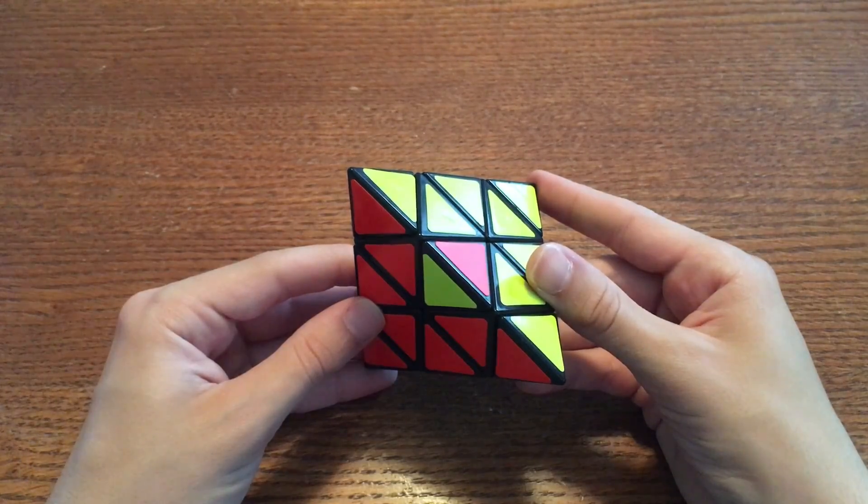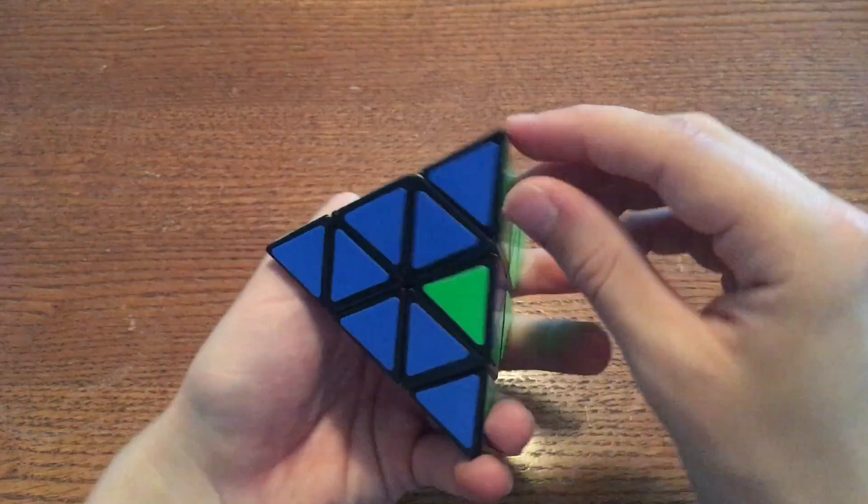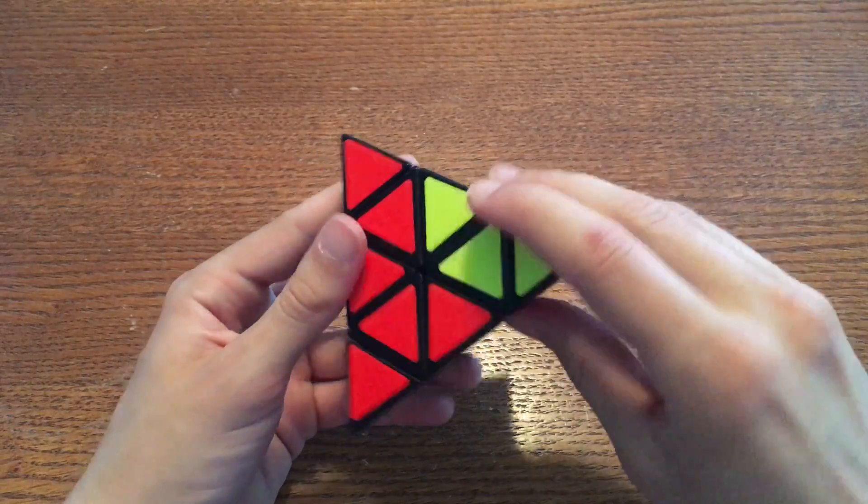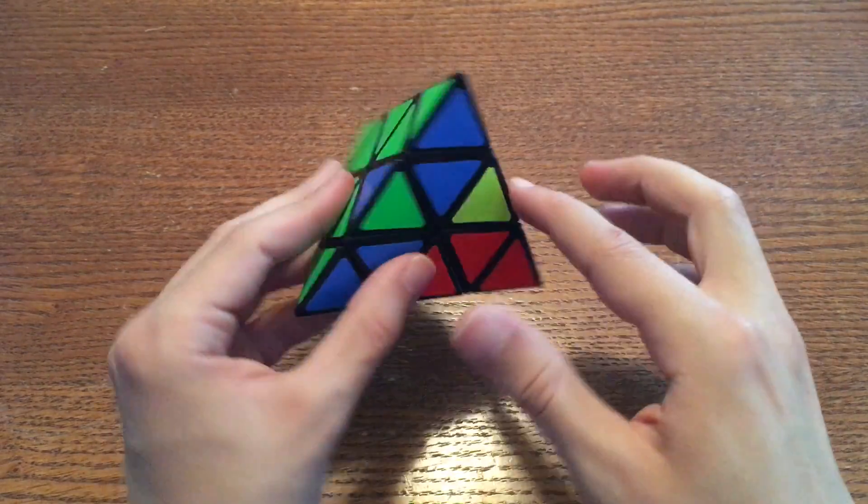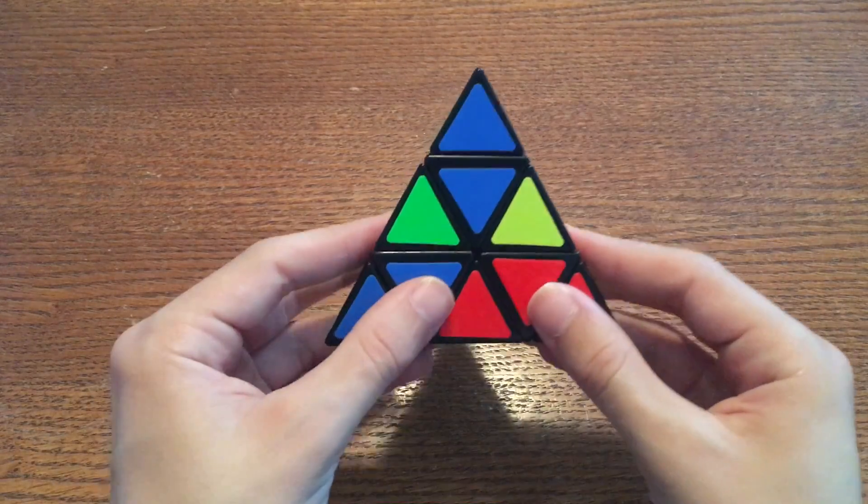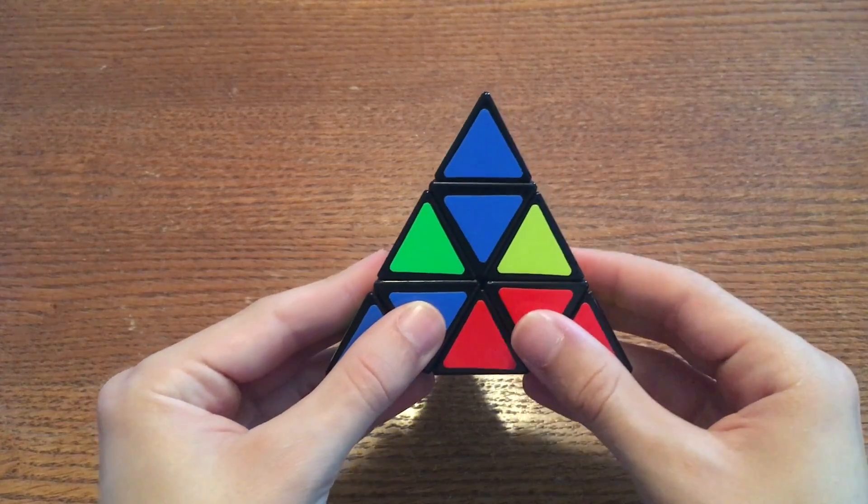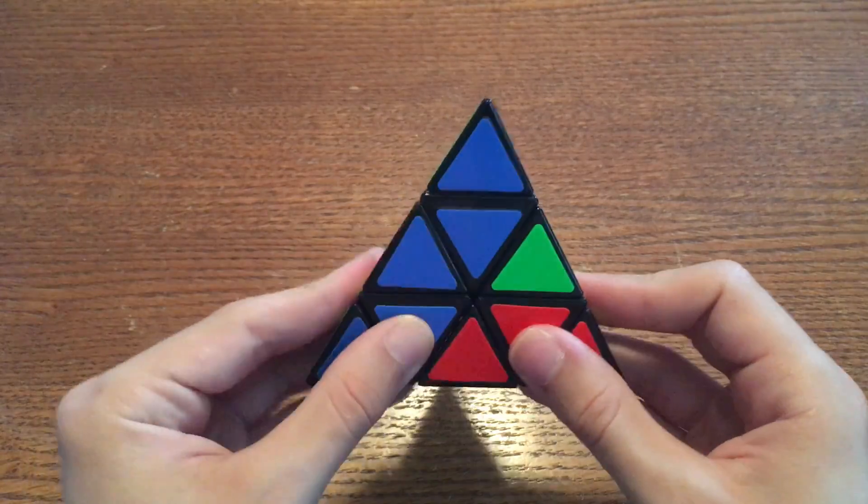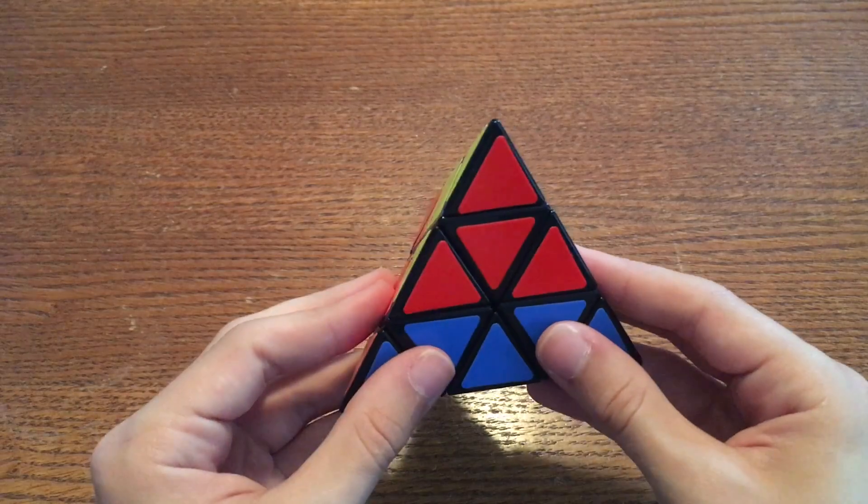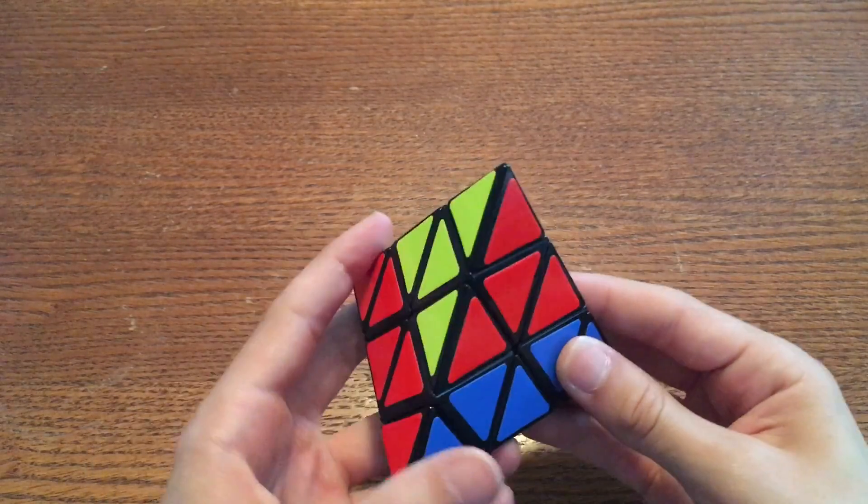If you're unlucky, and the last two bad edges are opposite each other like this, literally do any sort of turn, and the bad edges will now be next to each other on the same face. So look at that face and do the same thing. Right-handed alg, rotate counterclockwise, left-handed alg. The puzzle should be pretty easy to solve from here.